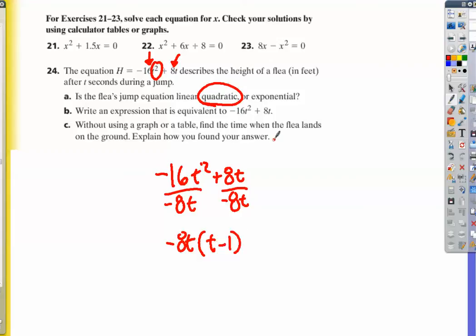Well, for question c, it asks how long was he in the air. That is an x-intercepts question.